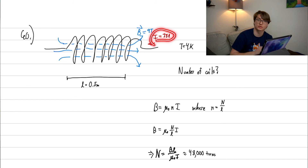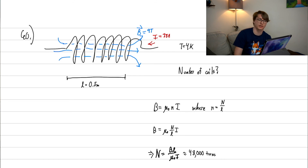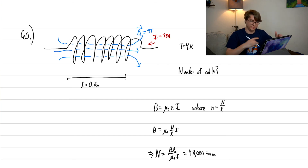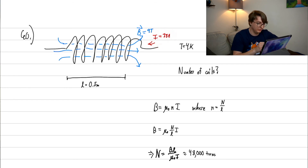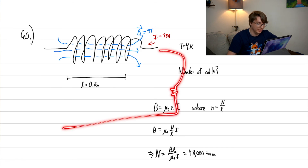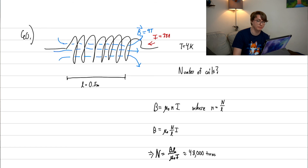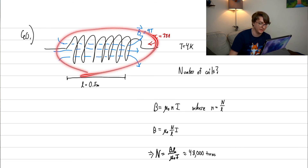With such large currents required, you start worrying about destroying wires — circuit breakers trip at 30 amps. I did an experiment in undergrad trying to reach just 2 Tesla and had to build a janky circuit with a very weak resistor, and had to constantly cool it down because of how hot it was getting from the high current needed.